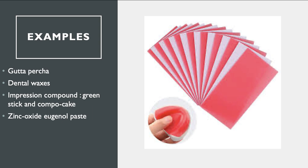The wax sheet rims are used to take the jaw relationship. So for any purpose, the main thing to understand is that they become moldable on the application of heat. This is the sole meaning of the term thermoplastic — that the plasticity of a material is increased or enhanced whenever heat is applied. Thank you.